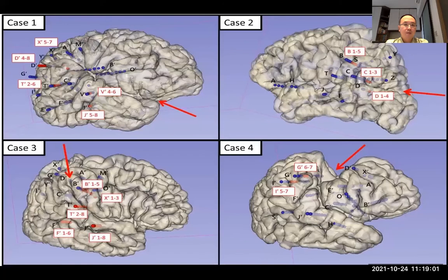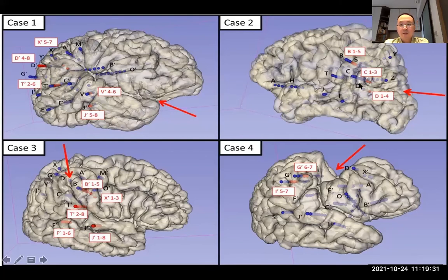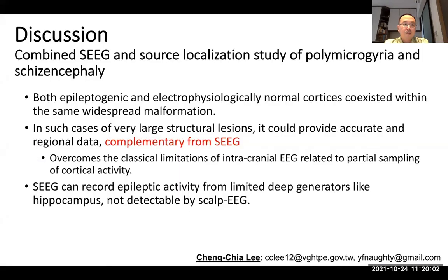Looking at the other four schizencephaly cases, not all patients are as favorable. In some cases, the seizure onset zone is very diffuse — not limited to one or two electrodes — but rather spanning three electrodes across several gyri around the schizencephaly. This kind of diffuse seizure onset overlapping with the motor cortex is difficult to manage. For those cases, we performed radiofrequency ablation to try to control seizures.